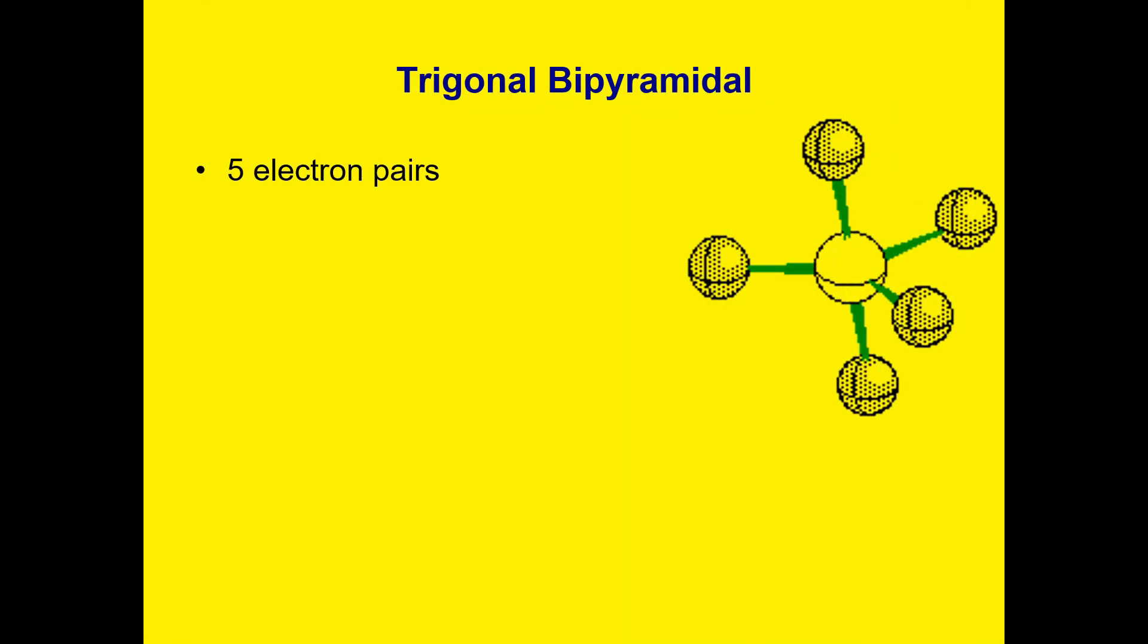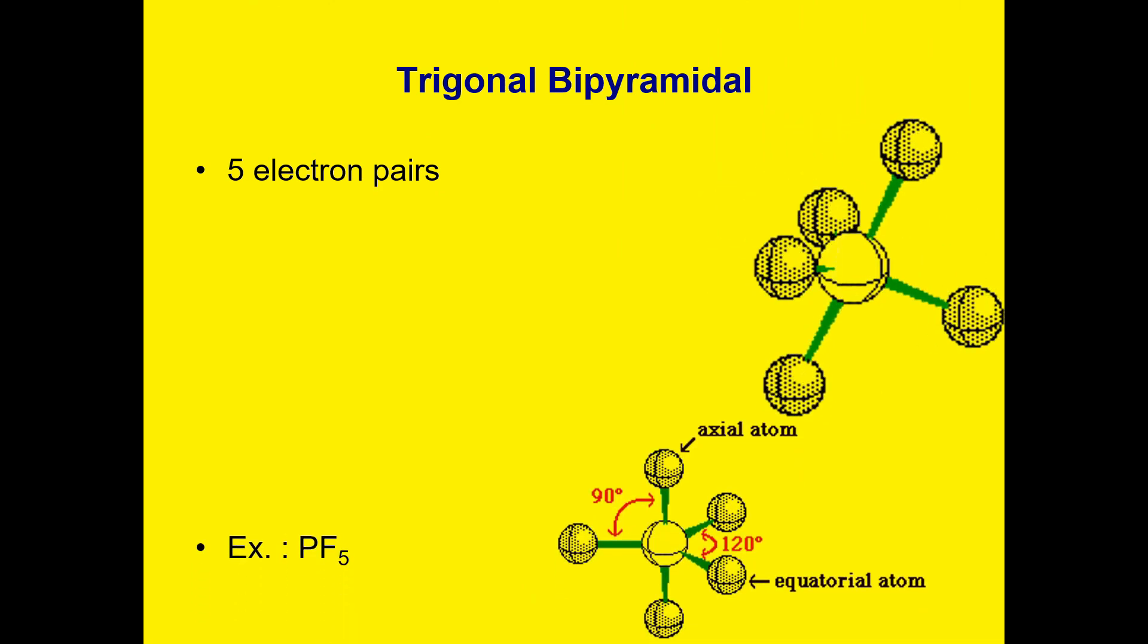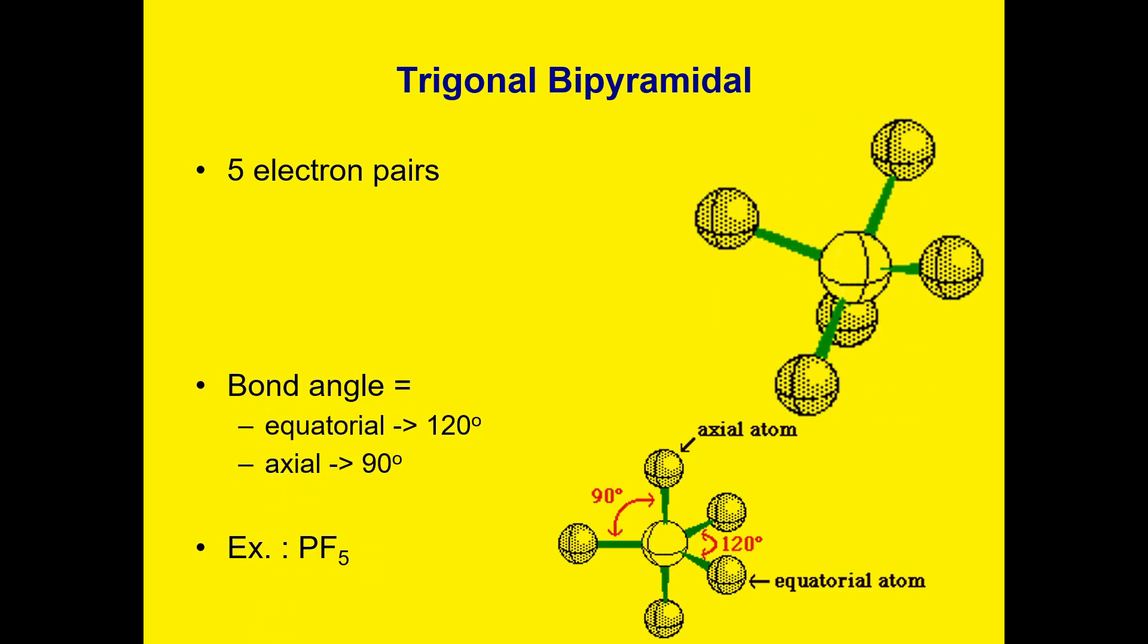We have trigonal bipyramidal. We have five electron pairs. Example is phosphorus bonded with fluorine. The bond angle is divided into two parts. The equatorial, which lies at the middle, measured horizontally to the nearest bond with an angle of 120 degrees. And the axial, which is measured starting from the equatorial upward to the nearest bond, which measures to be 90 degrees.